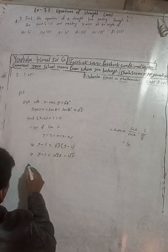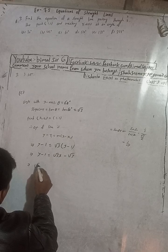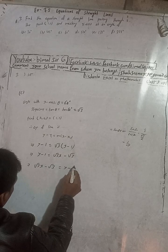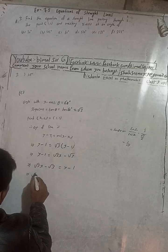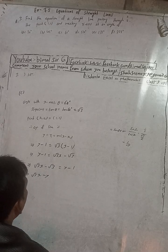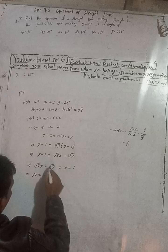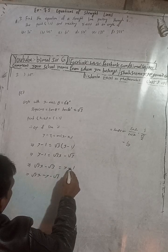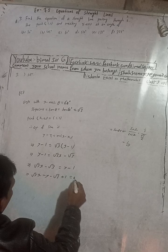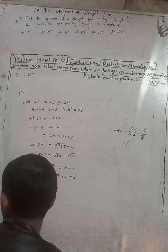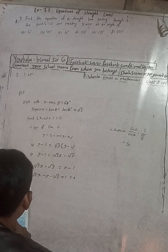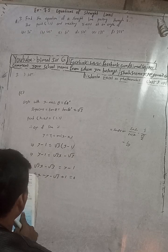Rearranging both sides: root 3 x minus root 3 equals y minus 1, which gives root 3 x minus y minus root 3 plus 1 equals 0. The book answer for part (c) is root 3 x minus y minus root 3 plus 1 equals 0. This matches — same answer.